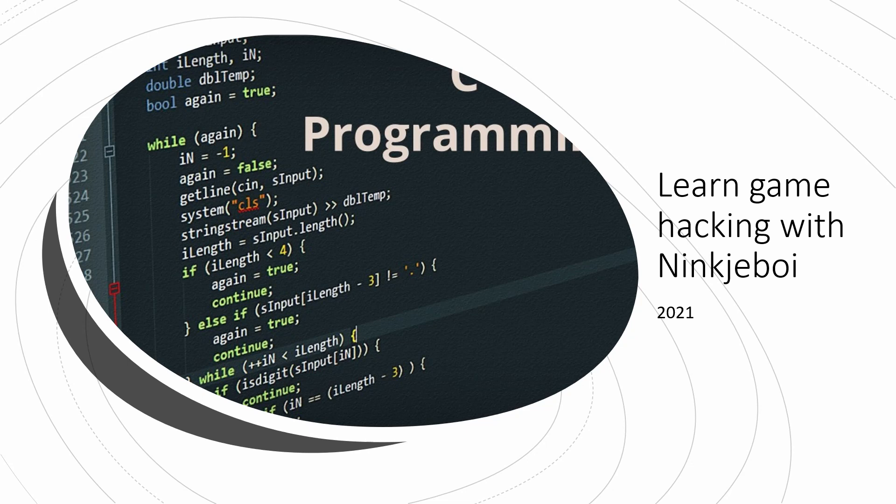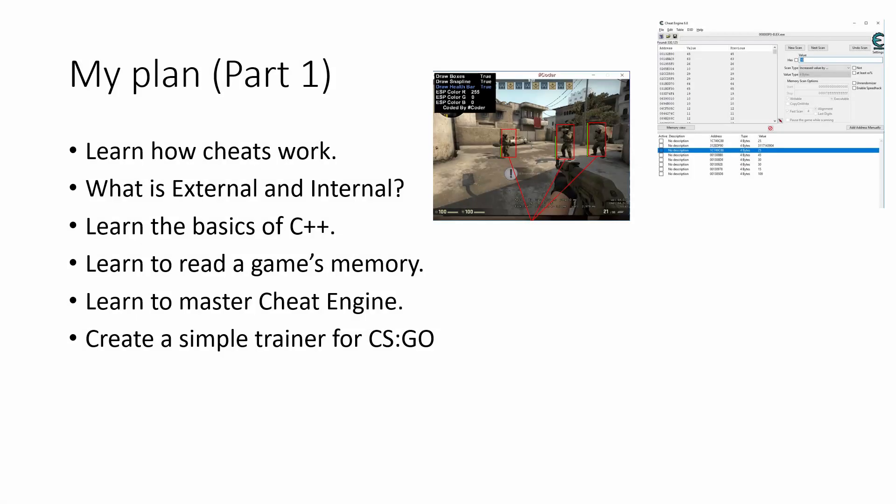I'll show the plan I made for the upcoming few videos. In episode 2 I will explain how cheats work and what different kinds of cheats there are. You're going to have to learn the basics of C++ and I will help you out with finding the right resources that work for you the most. In other videos I will also teach you how to read a game's memory and we will learn a lot about Cheat Engine. At the end of these videos you will master all the skills you need to start working on a simple CSGO cheat.